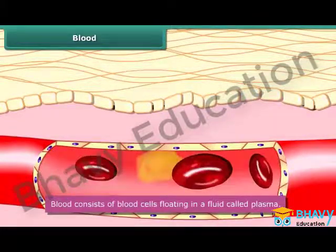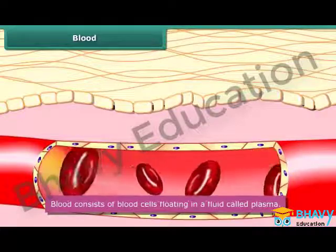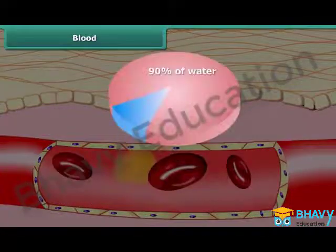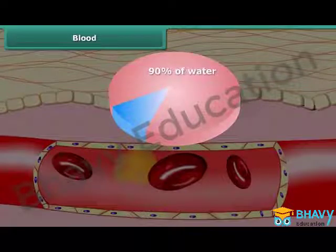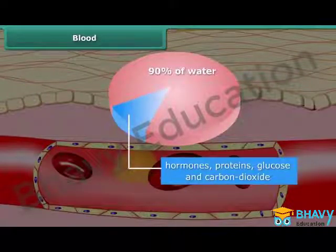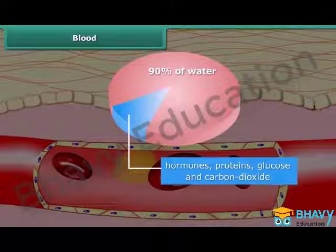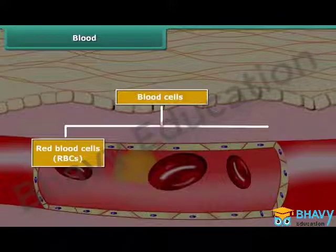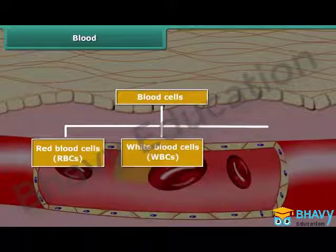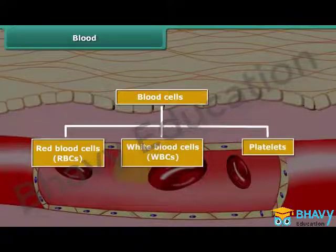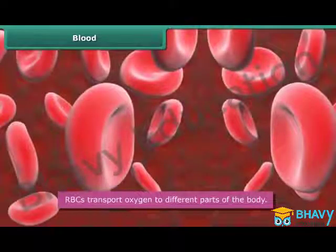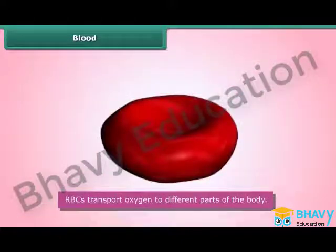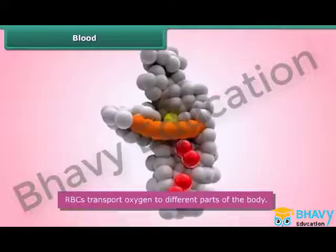Blood consists of blood cells floating in a fluid called plasma. Plasma is yellow in color and 90% of it is water. Besides water, plasma contains hormones, proteins, glucose, and carbon dioxide. There are three types of blood cells: red blood cells (RBCs), white blood cells (WBCs), and platelets.